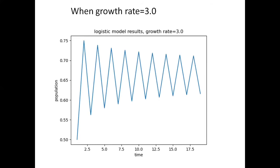With r between 3 and 3.449 for almost all the initial conditions, the population will approach permanent oscillations between two values. As you can see from the graph.